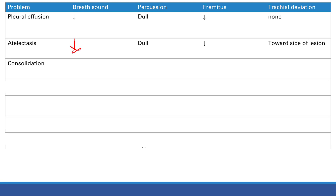Consolidation from lobar pneumonia or pulmonary edema: breath sounds are decreased, and you may hear crackles, especially with pulmonary edema. Percussion: with fluid in there it's more dense — sounds dull. Fremitus: with lobar pneumonia you have inflamed, denser lung tissue, so you get increased fremitus. No tracheal deviation.